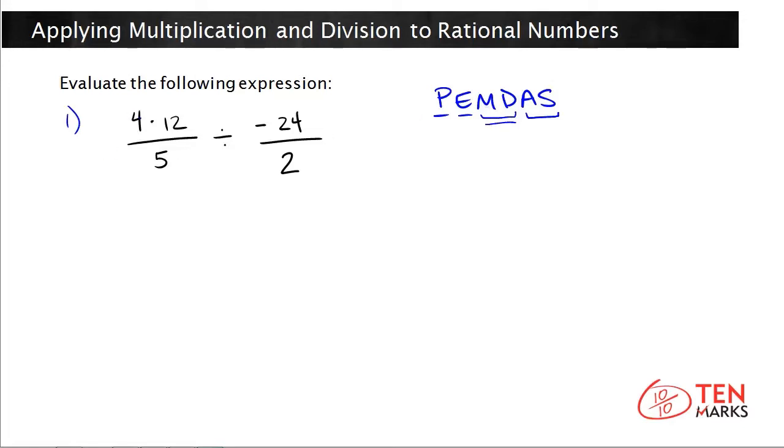Looking at the left, I see that there is a multiplication expression in the numerator of this fraction. So I'm going to multiply 4 times 12 is 48, and that's the new numerator there, and you keep it over 5 because nothing's happening to the denominator.